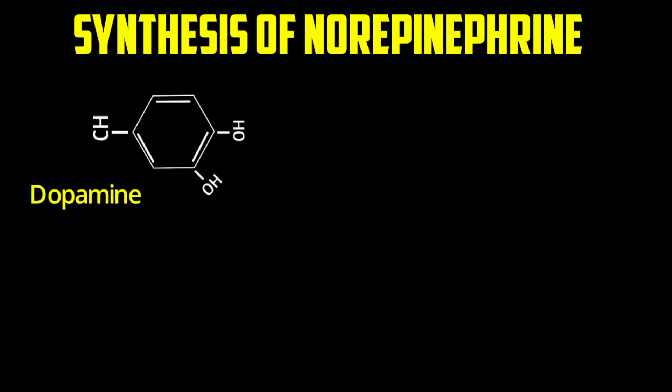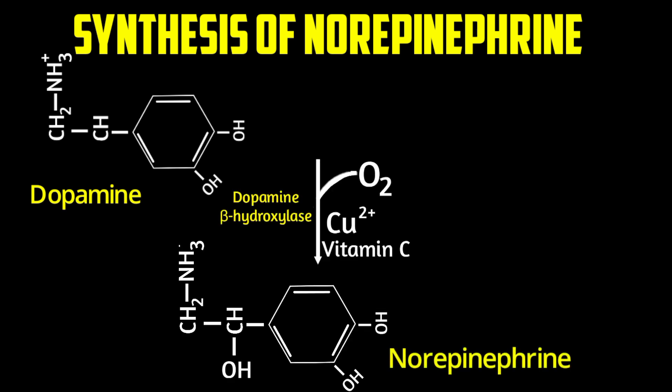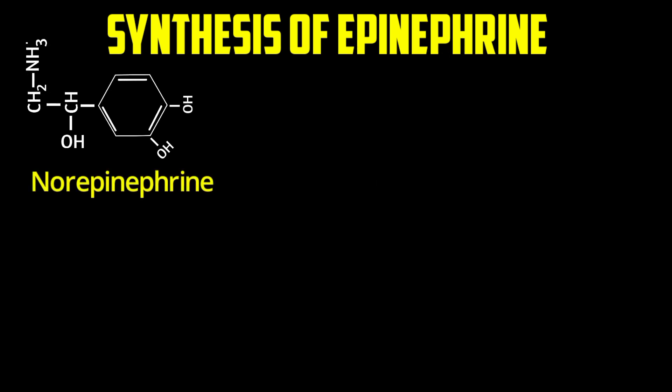Neurons that secrete norepinephrine synthesize it from dopamine in a hydroxylation reaction catalyzed by dopamine beta-hydroxylase. The difference between dopamine and norepinephrine is the addition of an OH group to the first carbon outside the catechol group. This enzyme requires vitamin C and uses copper as a cofactor.